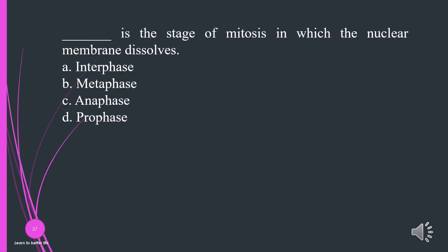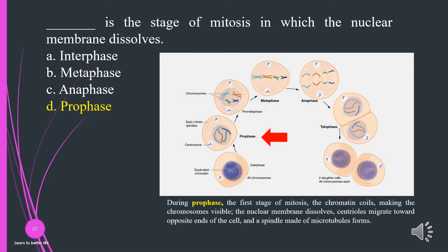What is the stage of mitosis in which the nuclear membrane dissolves? A. Interphase. B. Metaphase. C. Anaphase. D. Prophase. The answer is D, prophase.